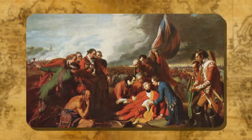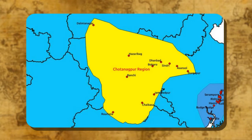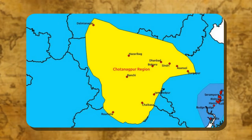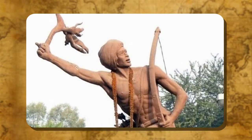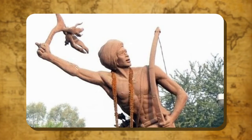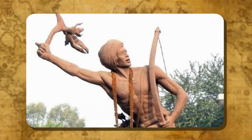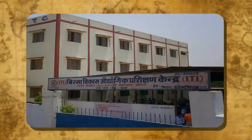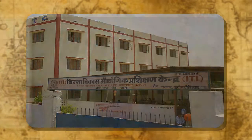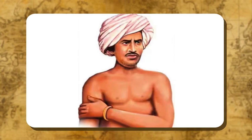Birsa died at the very young age of 25, but his deeds and agitations shattered the roots of the British. His movement forced the colonial government to promulgate the Chota Nagpur Tenancy Act, 1908 — the outcome of his dedicated struggle against tribal discrimination. Considering his contribution to the freedom struggle, he is known as Dharti Abba. The Government of India dedicated a statue in his memory in the Parliament premises, enacted relevant laws, implemented policies in the interest of tribals, and established several prominent educational institutes in his name.